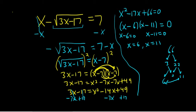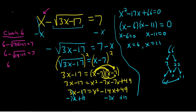So let's start by checking 6. Now whenever you check, you're supposed to go back into the original. So 6 minus square root, 3 times 6 minus 17, and that should be equal to 7. So 6 minus square root, 18 minus 17, and that should be equal to 7. So 6 minus square root of 1, and that should be equal to 7. So 6 minus 1 is 5. Fails! No, no good, right? So no, it's not 6.